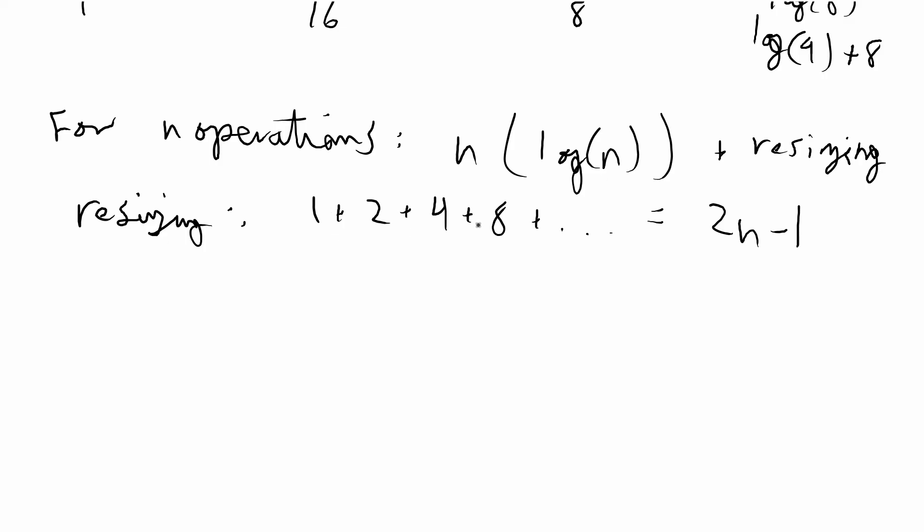So when n is 1 you have 2 minus 1 that's 1, and so on. So the pattern overall is n times log n plus 2n minus 1.